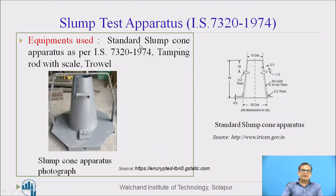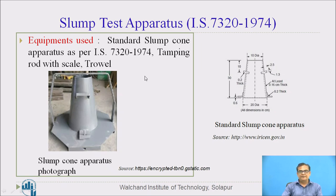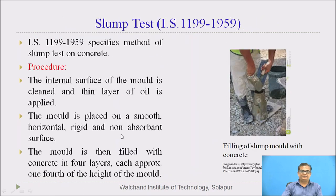Slump test apparatus is devised by IS 7320-1974, which shall be used for performing this test. The photograph and dimensions of the mould are shown here. Standard dimensions are given — this particular mould only shall be used for this test, along with tamping rod with scale and trowels. Now let us see step by step the test procedure, which is given by IS 1199-1959.